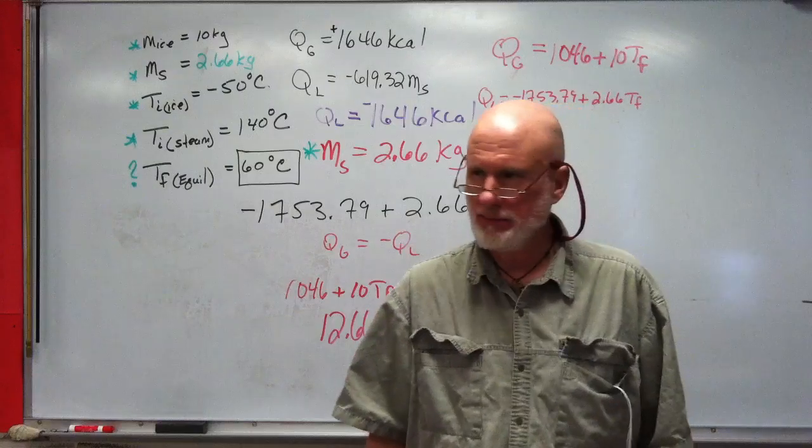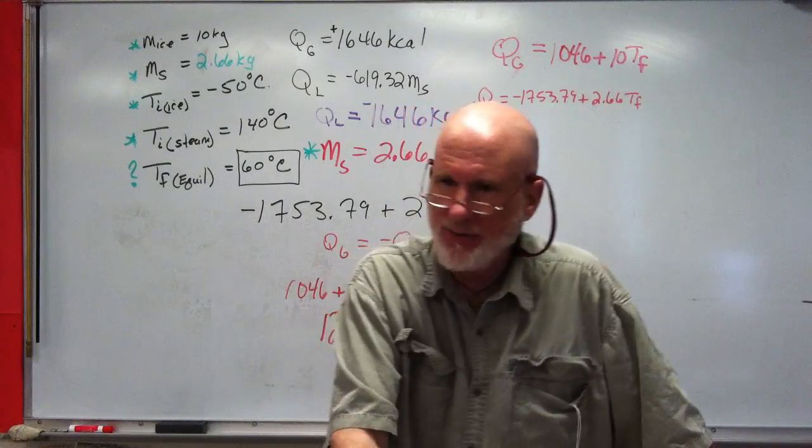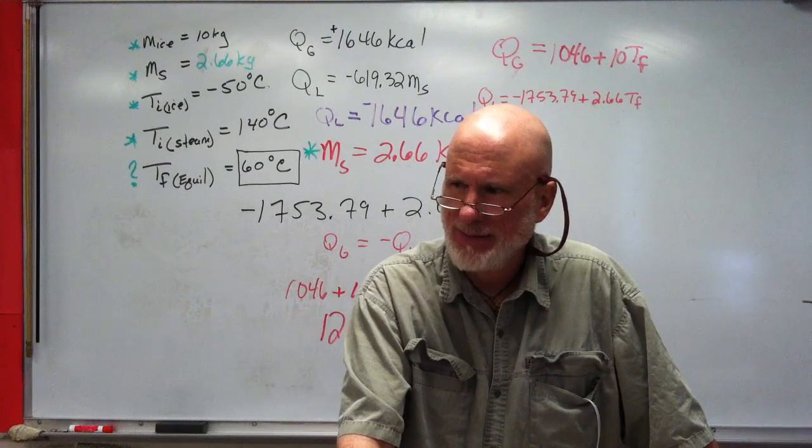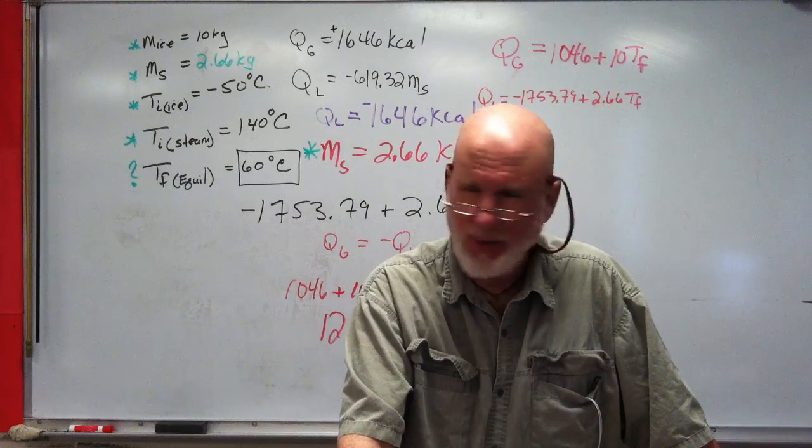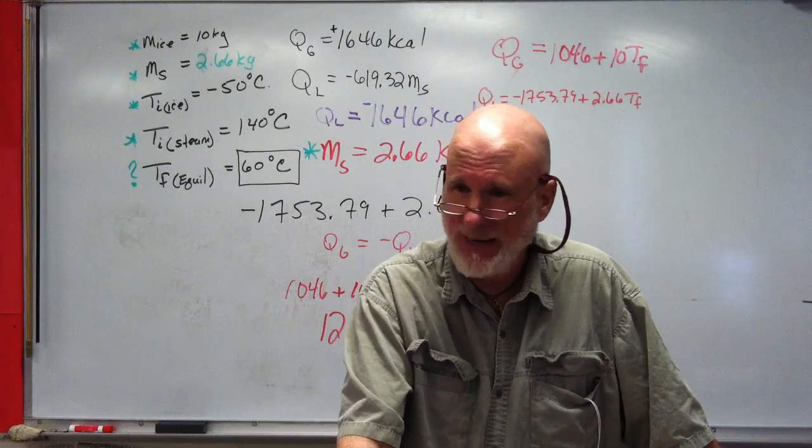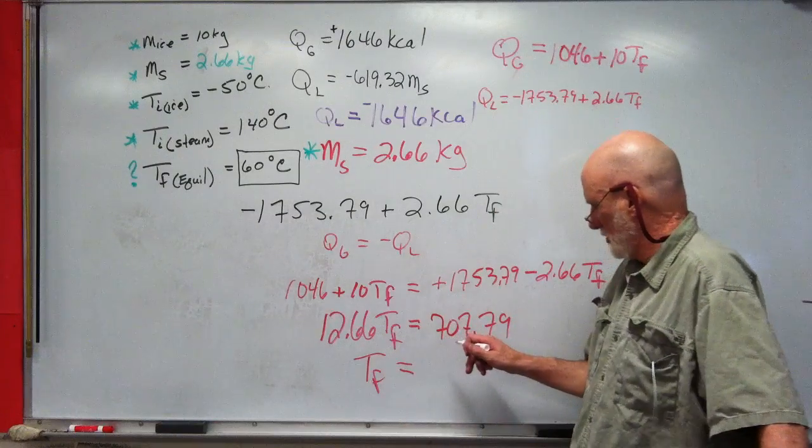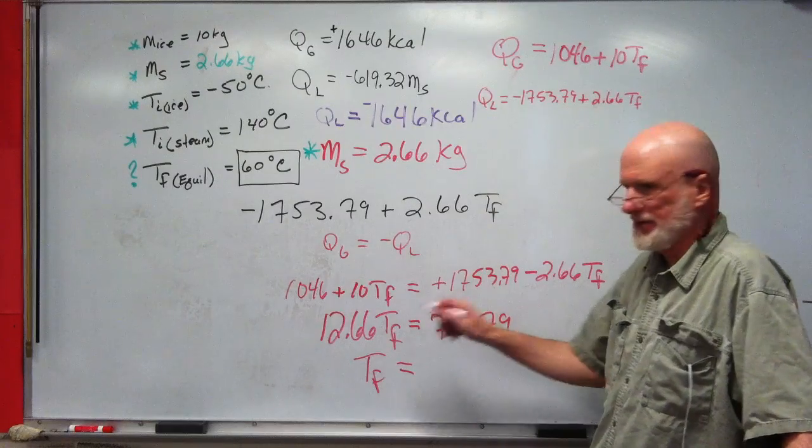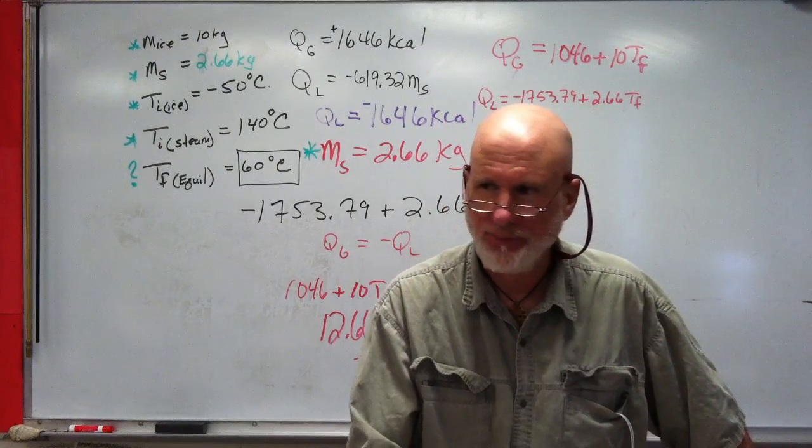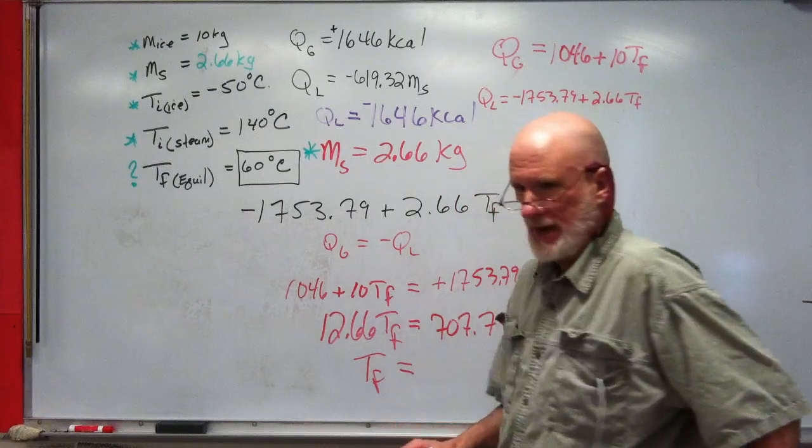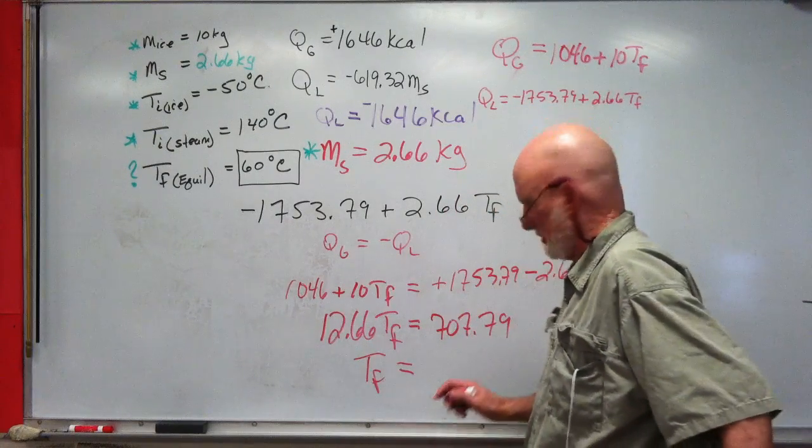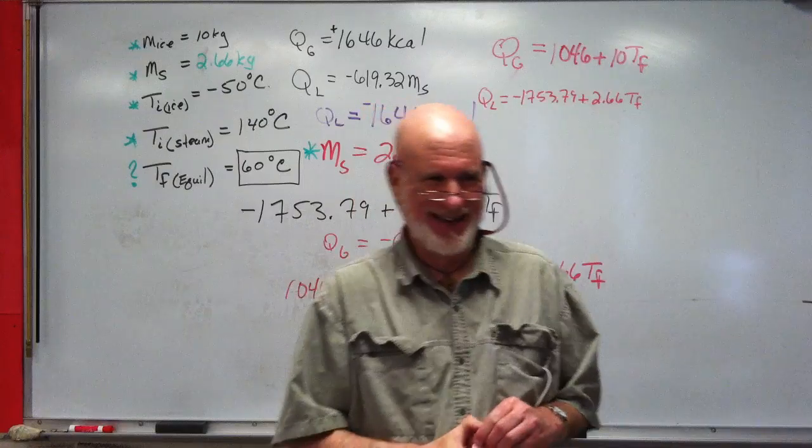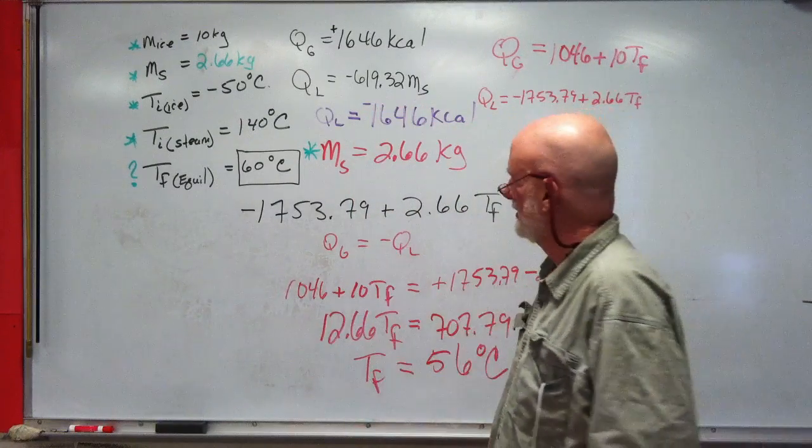Hopefully we're right. I've been doing this my entire adult life, and when I do a long problem, I always wonder, did I get it right? I always presuppose I'm going to get it wrong, even though I've been doing this my whole life. So 707.79 divided by 12.66 is what? 55.9. We're that far off? Round-off error. Close enough.